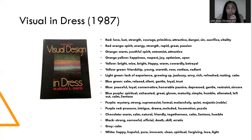What about black? Black can describe strength, sorrow, official, death, skill, or magic. Gray is calm. White is happy, hopeful, pure, innocent, and so on.